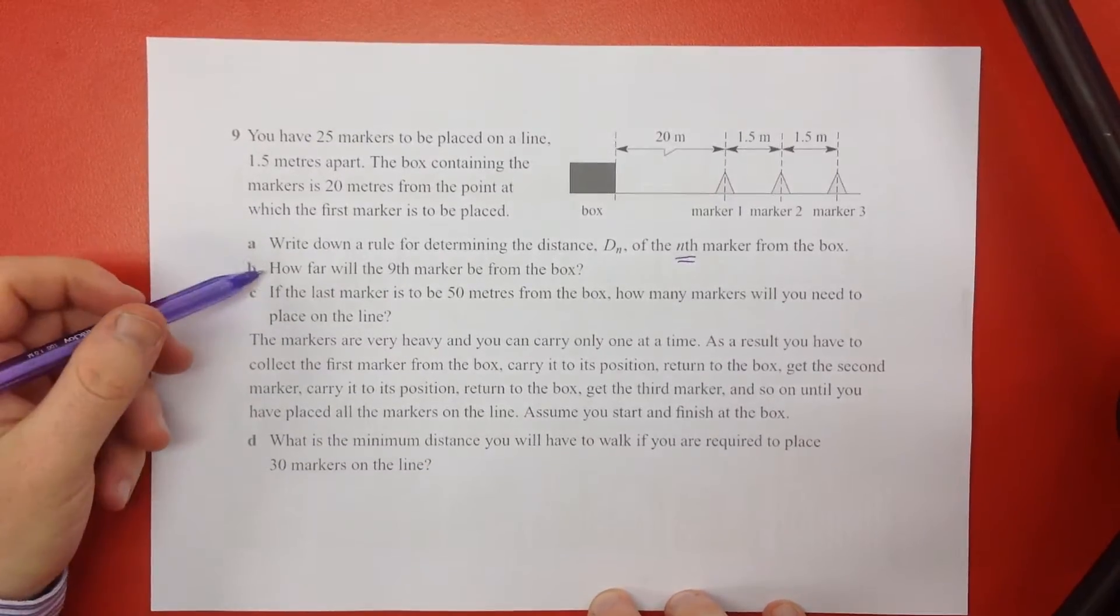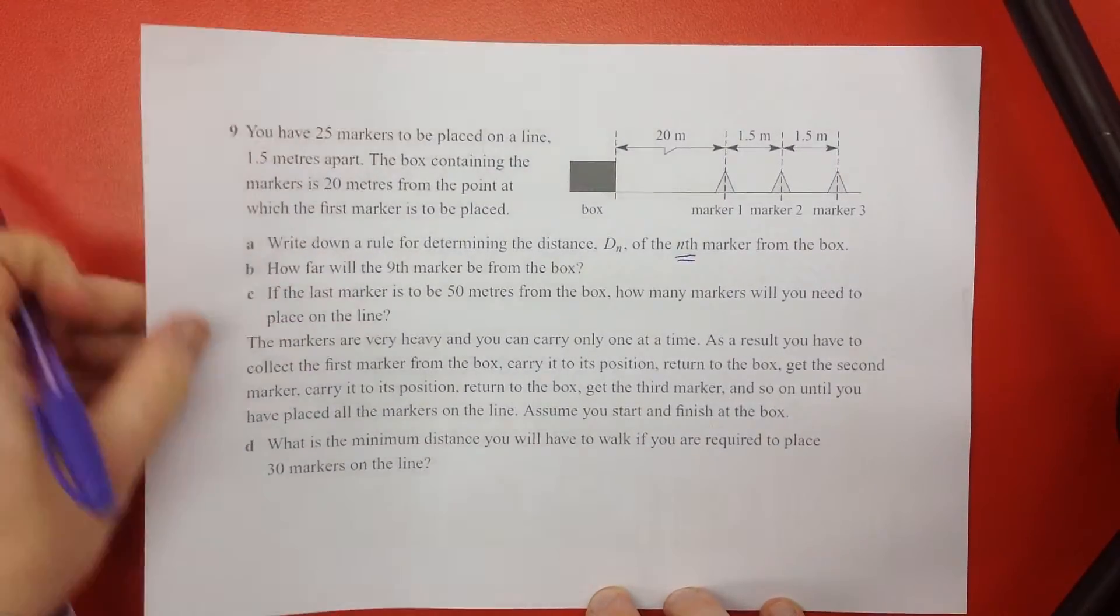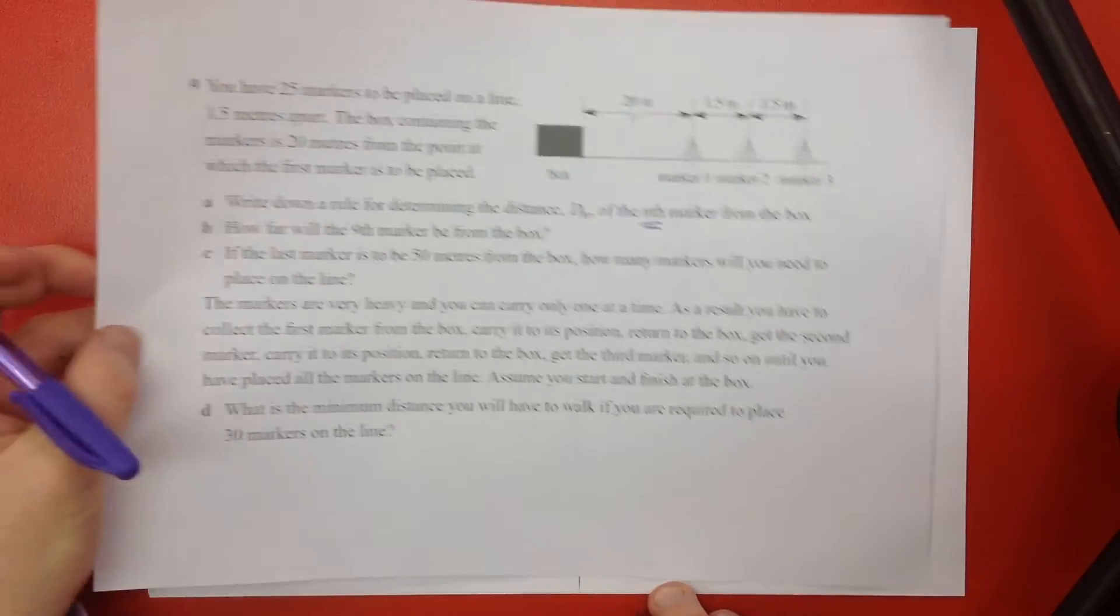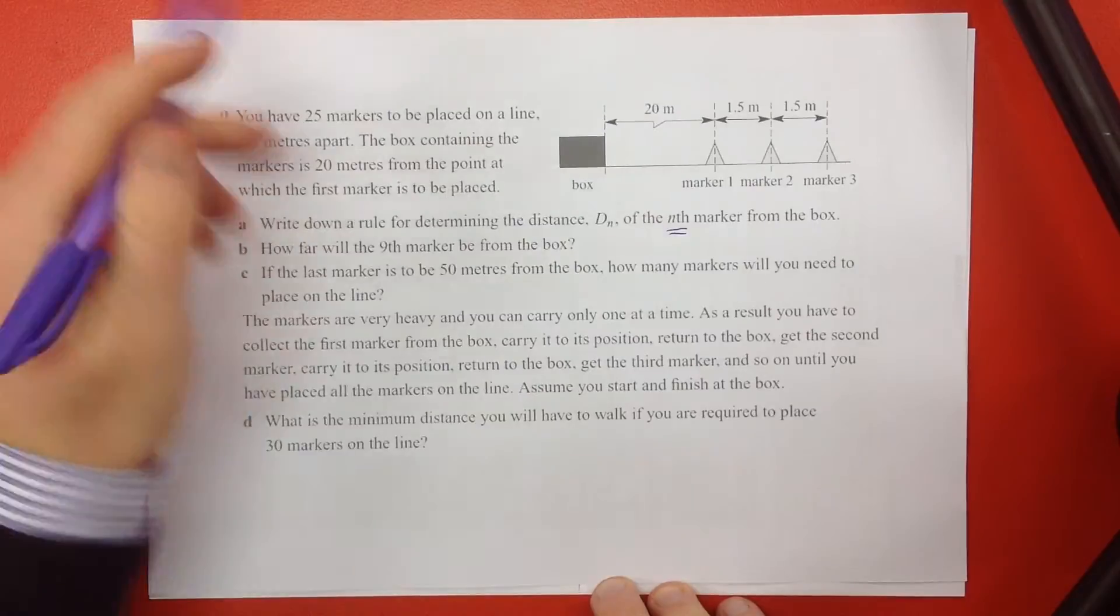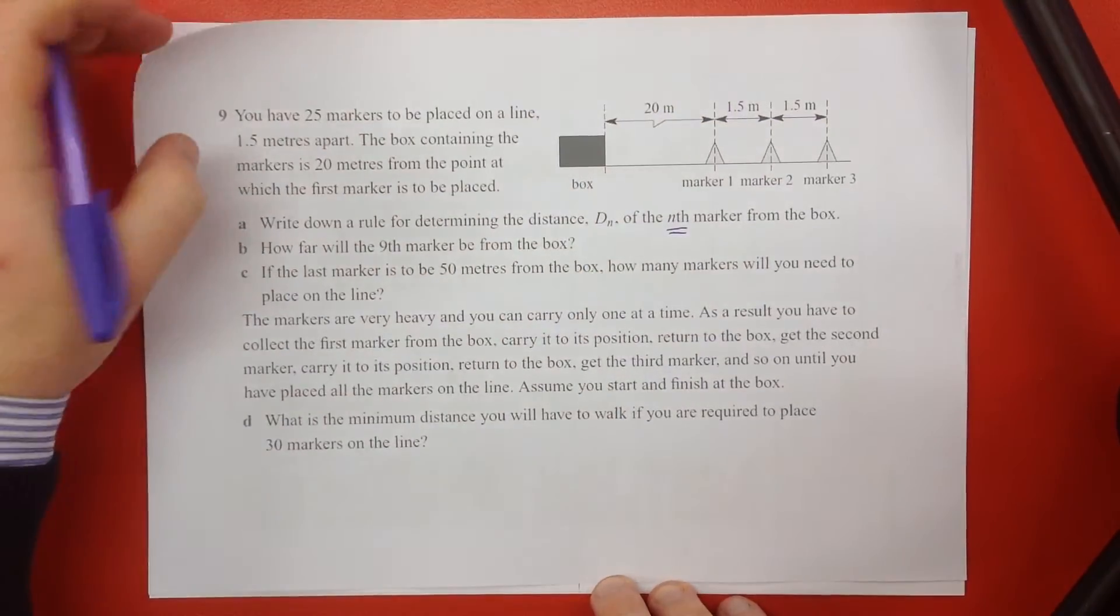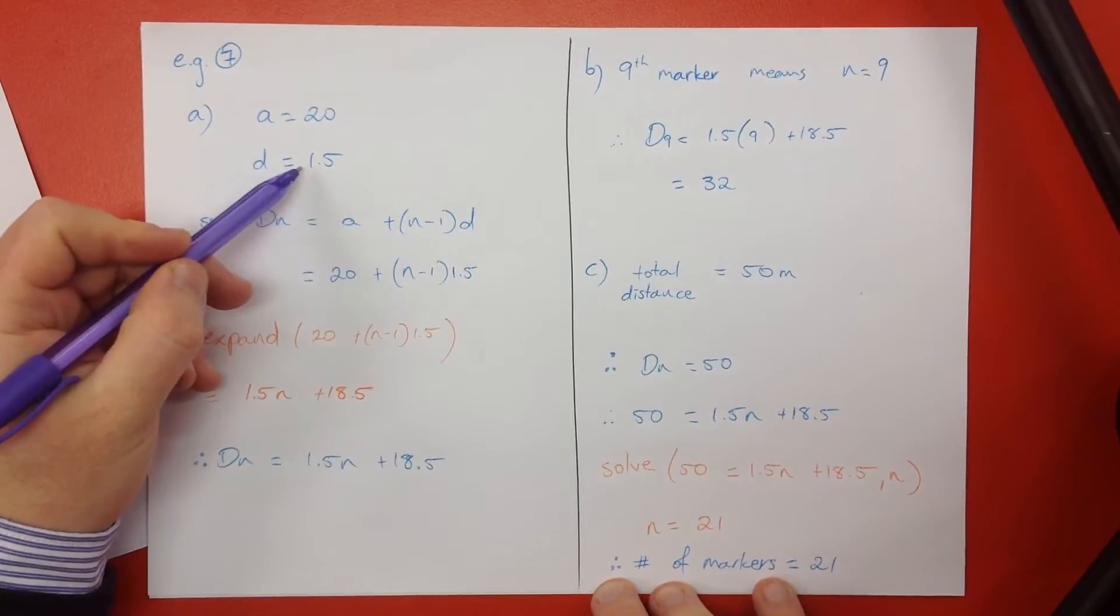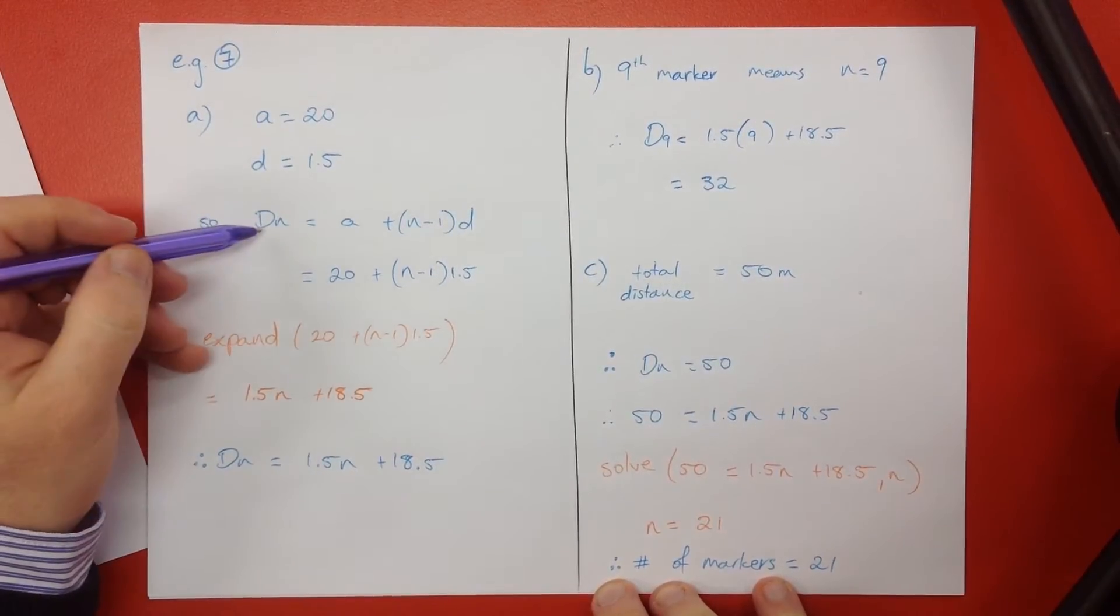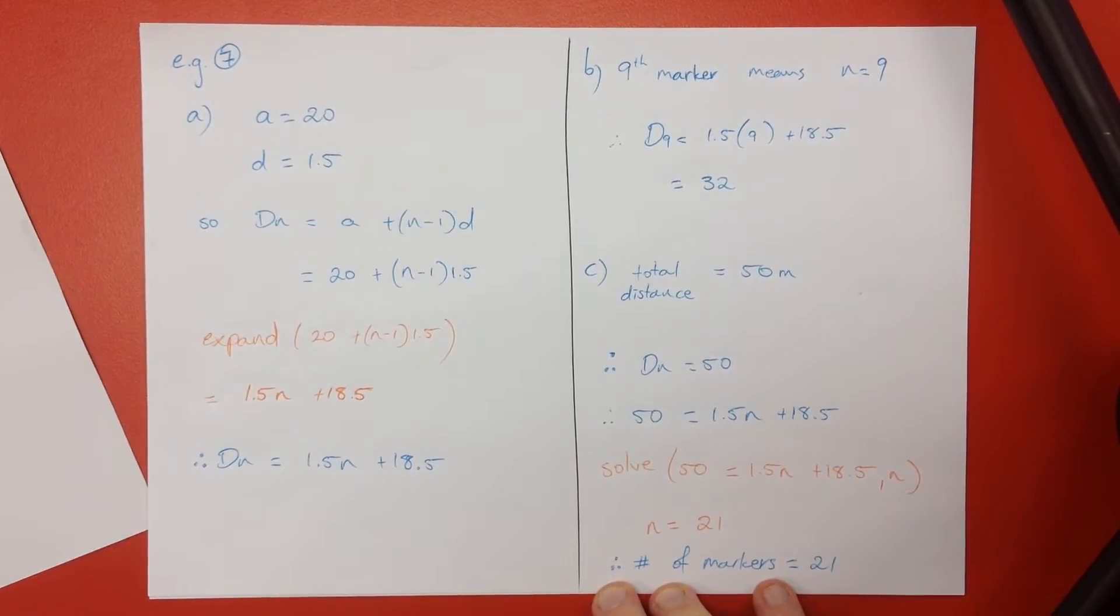How far will the ninth marker be? We can figure that out. Let's just start and we'll see how we go with the first two. So, a was 20, the starting distance was 20, that was 20 metres, the first marker. And then each extra marker is 1.5, so our difference should be 1.5. There you go, there's 1.5. So now that I have the a and the d, I can make a formula pretty easy. I've used d of n instead of t of n, because the question gave me d of n, distance of n.